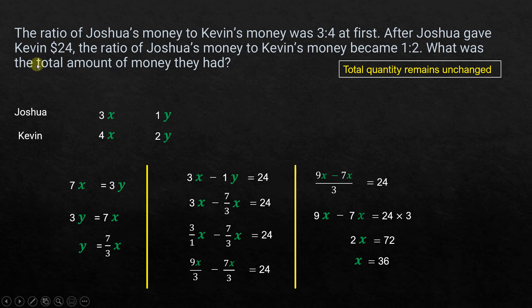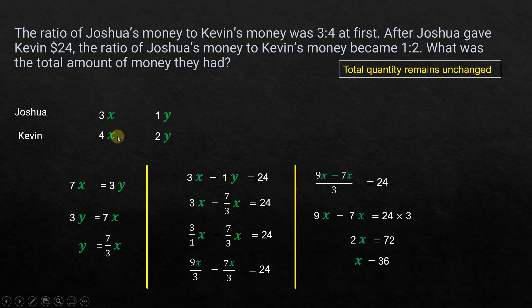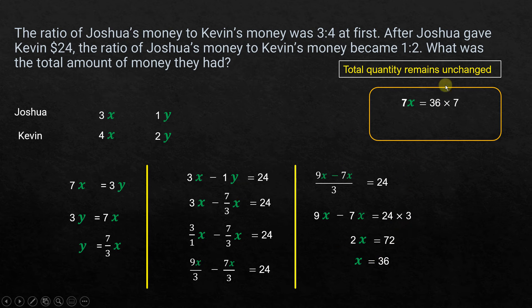The question is what was the total amount of money they had. Since total remains unchanged, I use 7x = 7 × 36 = $252. So the total amount of money both of them had is $252. This first algebra method is exactly the same approach as the model method — just using algebra instead of visual models.